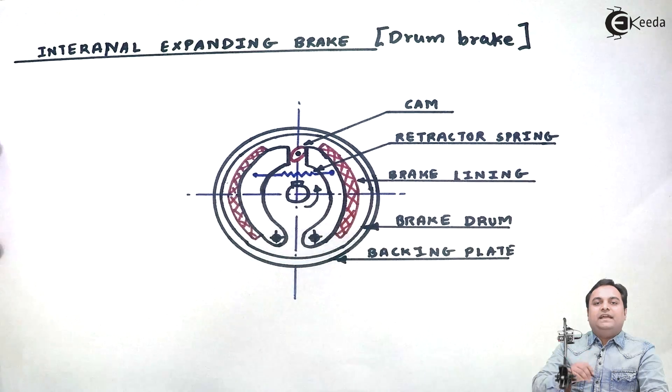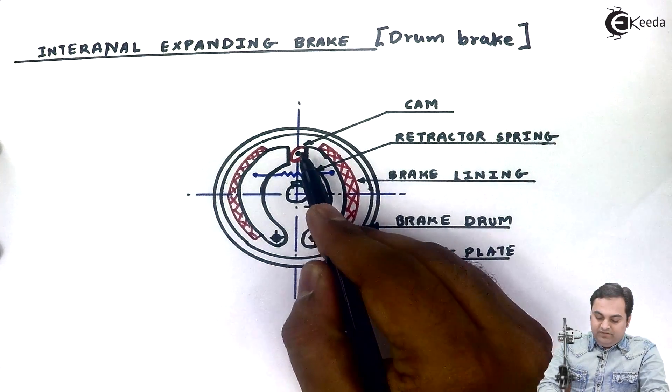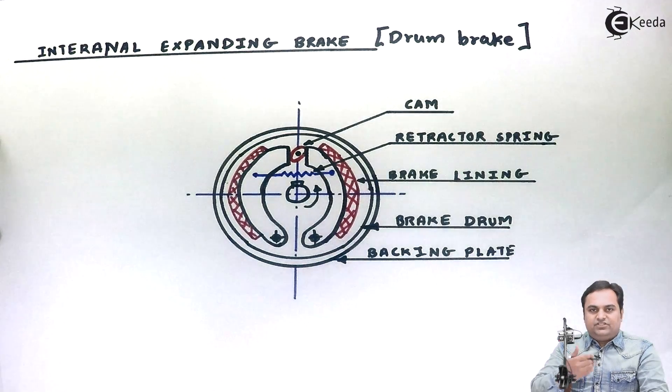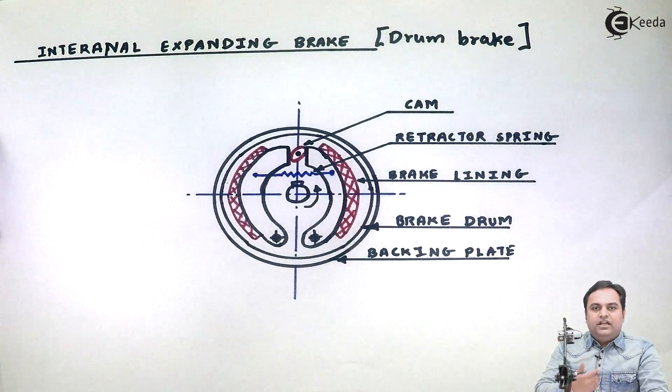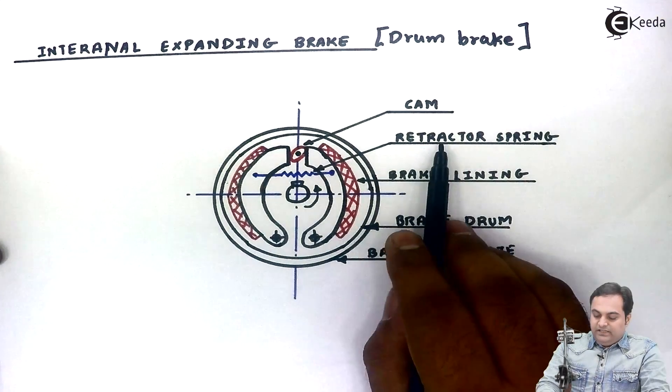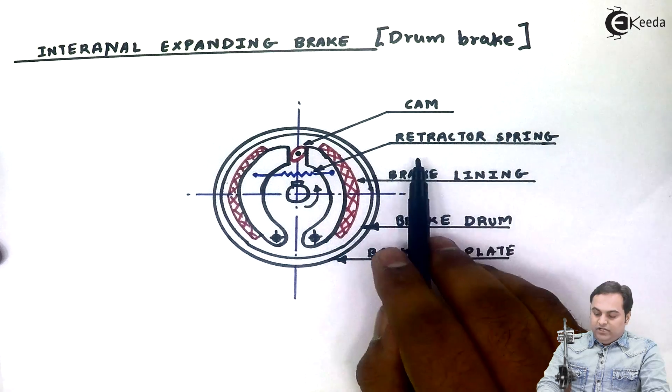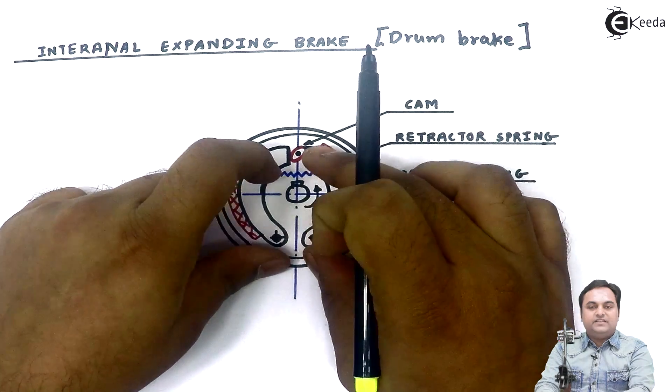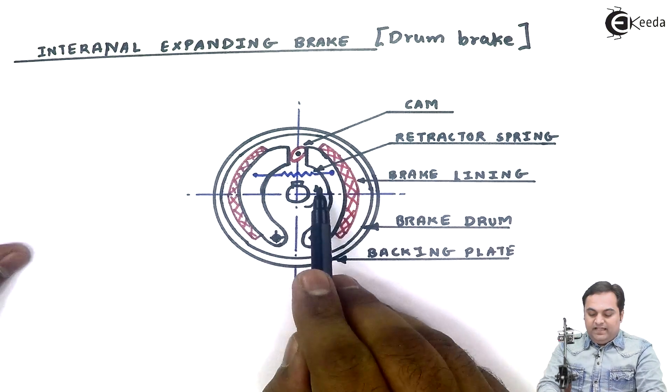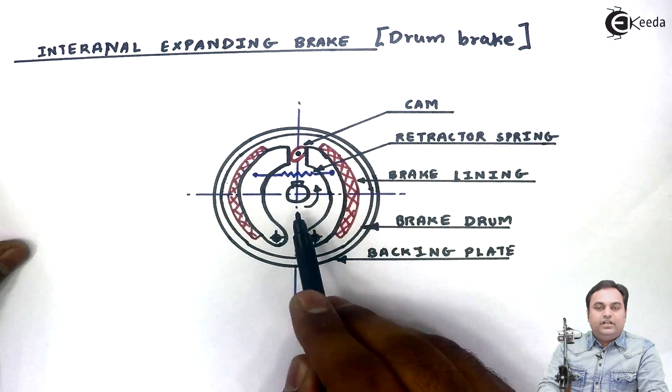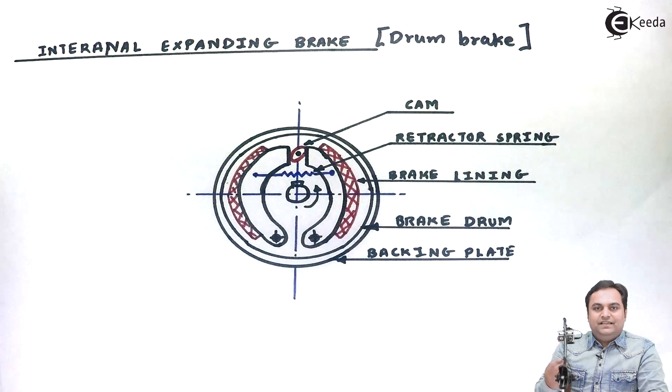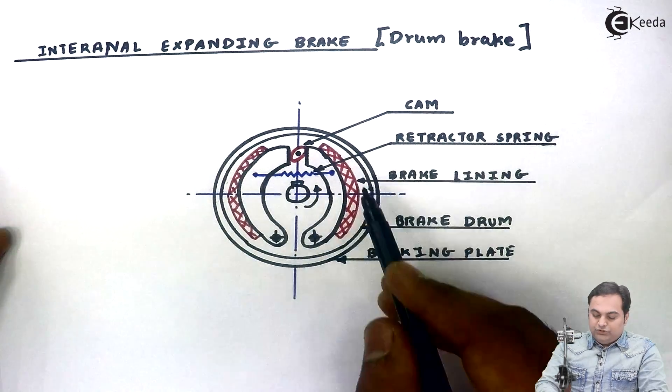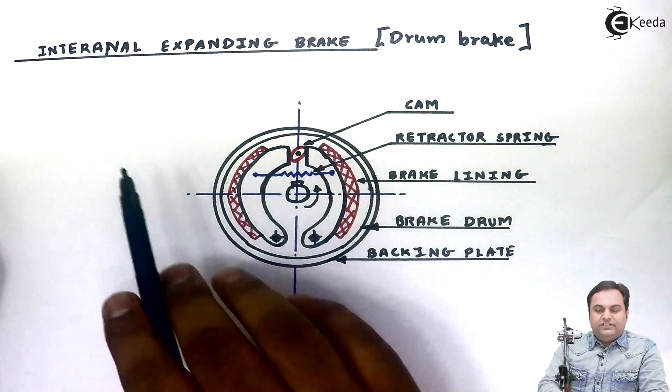This cam is the actuating mechanism. It means because of the cam the braking action takes place. The starting of the braking action is provided with the help of cam. Then we have retractor spring. Retractor spring is used so that once the braking action has been taking place, you have to bring the brakes into their proper position, that is the initial position. For that we are using the retractor spring. So this was regarding the construction of internal expanding brake.